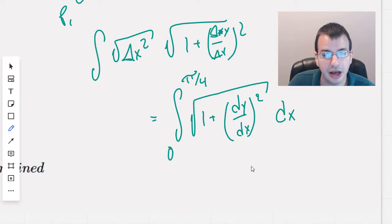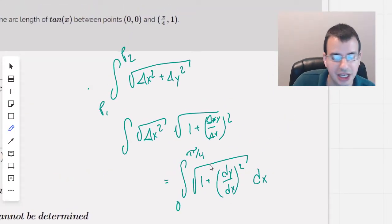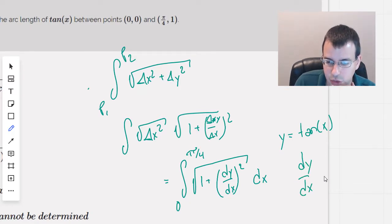Yeah, that looks pretty good. So now we have y equals tangent of x, and we want to find dy/dx. So dy/dx would then be secant squared of x.